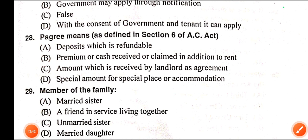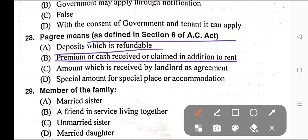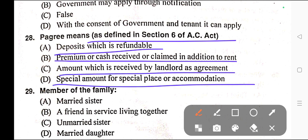Question number twenty-eight: Pagadi means as defined in Section 6 of the AC Act — A) Deposits which are refundable, B) Premium or cash received or claimed in addition to rent, C) Amount received by landlord as agreement, D) Special amount for special place or accommodation. Correct answer is option B — premium or cash received or claimed in addition to rent.